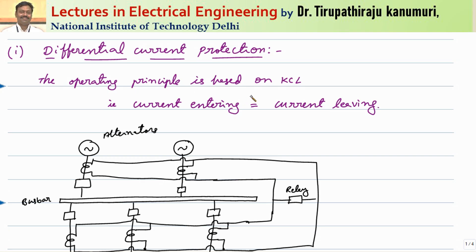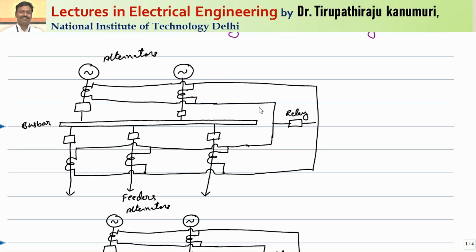The operating principle is based on KCL only — that is, the current entering is equal to current leaving. Whenever I refer to busbar protection, that includes the protection of your busbar, your circuit breaker, as well as your isolators. All these parts come under the protection of the busbar only.